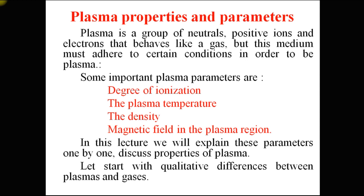As we know that plasma is a group of neutral atoms, positive ions and electrons, and it behaves like a gas, but this medium must adhere to certain conditions in order to be a plasma. Some important plasma parameters are degree of ionization, the plasma temperature, the density and magnetic field in the plasma region.